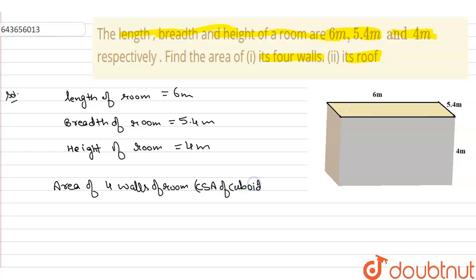Curved surface area of cuboid means area of four walls of the room, which is equal to 2H(L+B). After putting values, we get 2 multiply 4 bracket 6 plus 5.4, which is equal to 8 bracket 11.4.